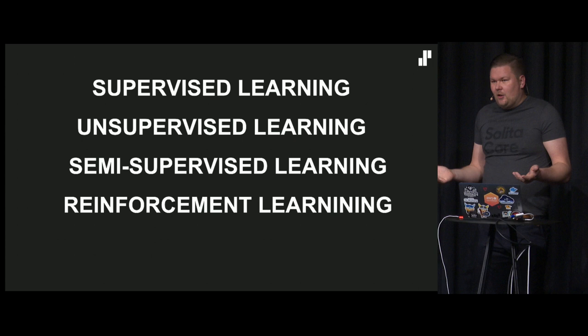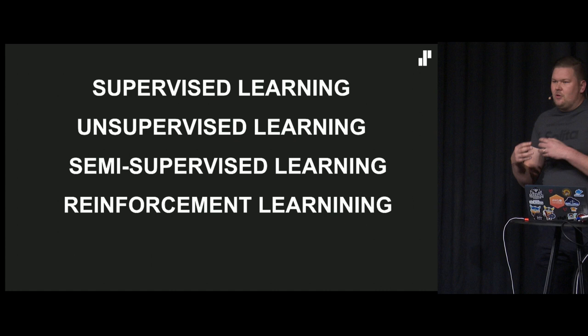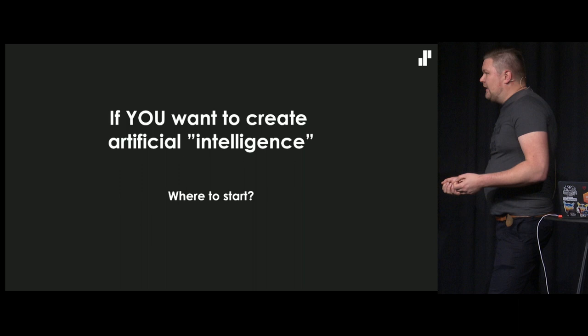Then we have reinforcement learning, and reinforcement learning is actually the interesting part of machine learning. In reinforcement learning, you define a function that tells your bot whether it's doing any good or something like that - it resembles really closely how humans actually work. But supervised and unsupervised learning don't actually resemble brains at all.